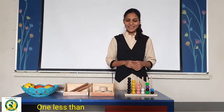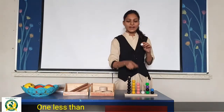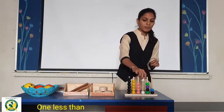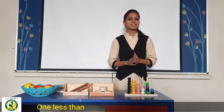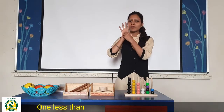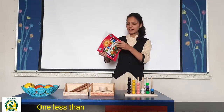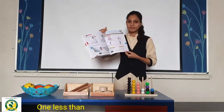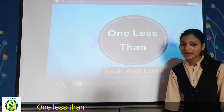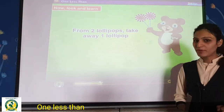Now look at the white beads — only two. Take away one bead. Now only one white bead is left. So, 'one less than' means from any number of objects, if you take away one, you have one less. For example, from five fingers take away one — four fingers are left. Now everyone take out your sunshine book and open page number 159. The topic is 'One less than'.